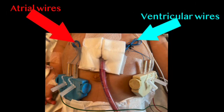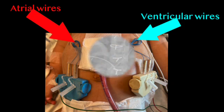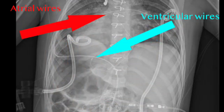By convention, the atrial wires exit on the patient's right and the ventricular wires on the patient's left. If your patient has dextrocardia, the surgeon will usually cross the wires internally so the atrial wires still exit the right. But ask, just to be sure.